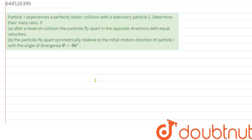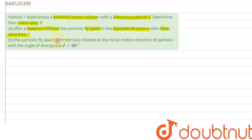We are given a question: particle 1 experiences a perfectly elastic collision with a stationary particle 2. We need to determine the mass ratios. First part: after a head-on collision, the particles fly apart in opposite directions with equal velocity. Second part: the particles fly apart asymmetrically relative to the initial direction, with an angle of divergence theta equals 60 degrees.